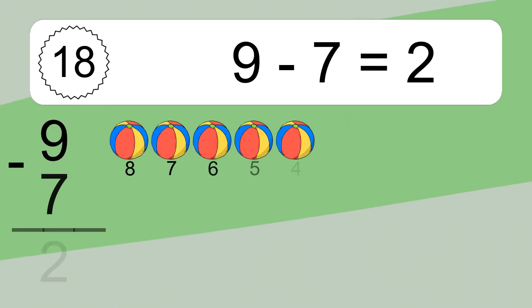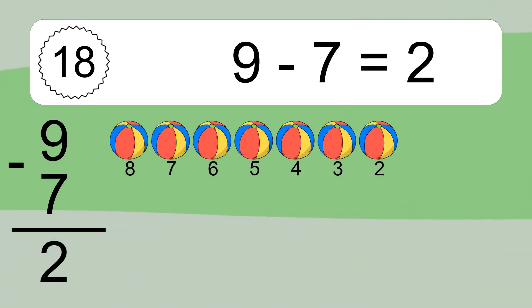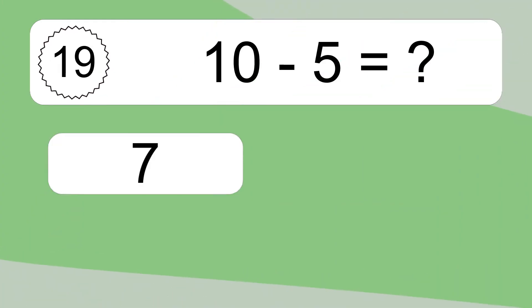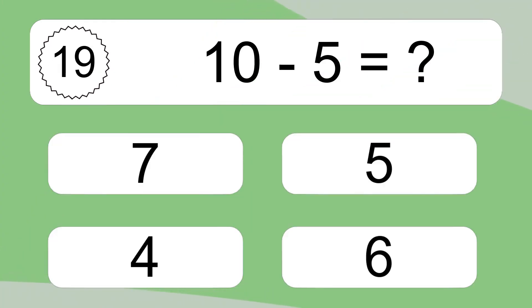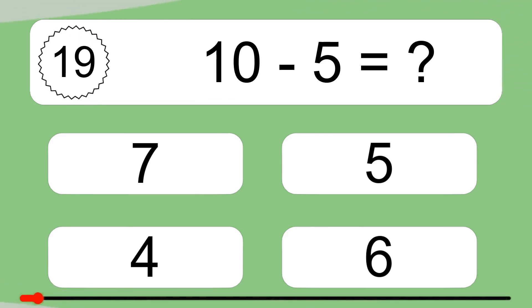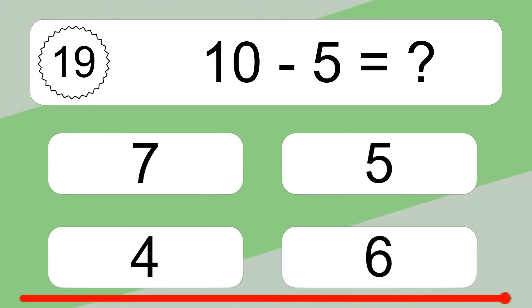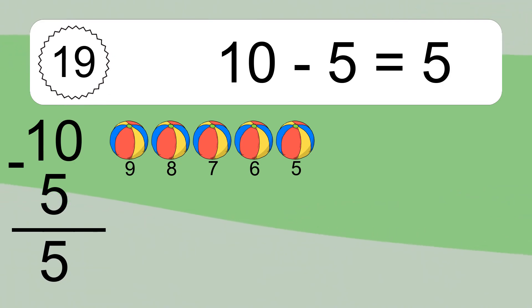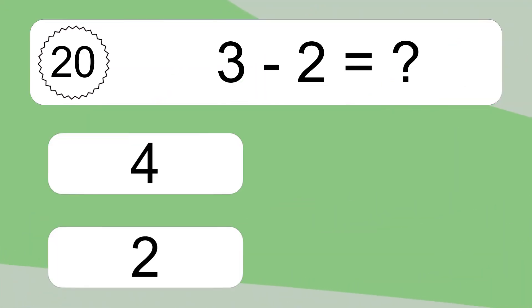9 minus 7 equals what? 9 minus 7 equals 2. Let's count it: 8, 7, 6, 5, 4, 3, 2. 10 minus 5 equals what? 10 minus 5 equals 5. Let's count it: 9, 8, 7, 6, 5.